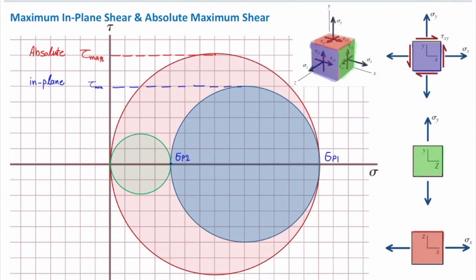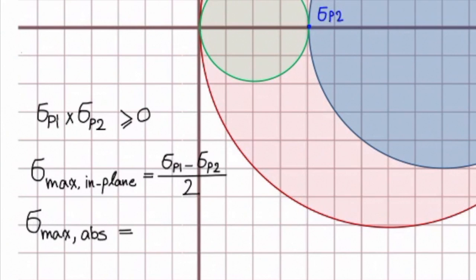In this case, the largest radius belongs to the red circle. I can put everything together into a formula. If σp1 and σp2 have the same sign — in this case both positive, meaning σp1 × σp2 > 0 — then the maximum in-plane shear stress is (σp1 − σp2) / 2, which is the radius of this blue circle. The maximum absolute shear stress is σp1 / 2 — the largest principal stress divided by two. So that is the maximum absolute value, and we can distinguish between the maximum in-plane and maximum absolute values.